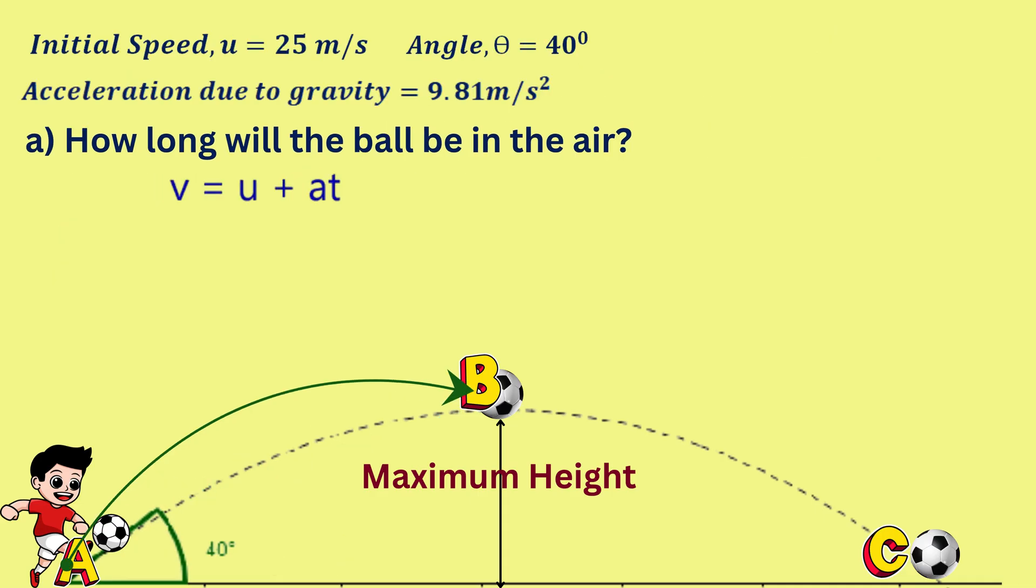Now, let's make our substitutions. The final velocity, v, is 0, since the ball will stop momentarily at its maximum height, B, before it starts to fall.